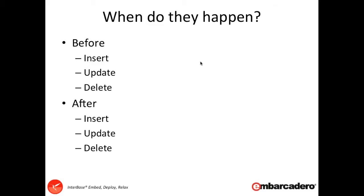There are six different states for a trigger to run at. They either run before an insert, before an update, before a deletion of a record, or they run after the event — so after the insert, update or delete.